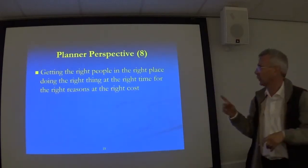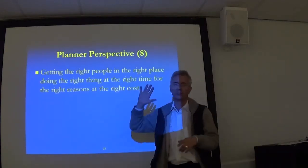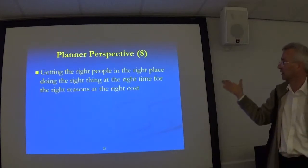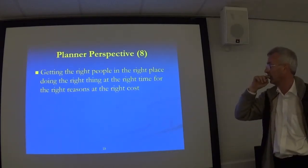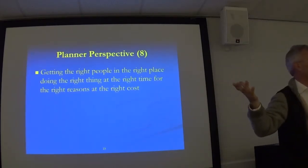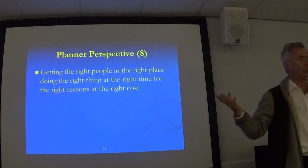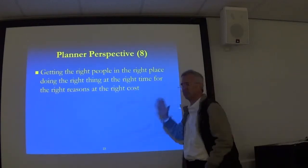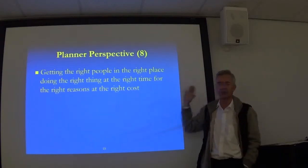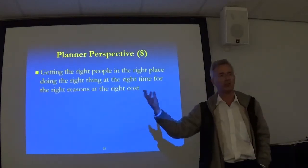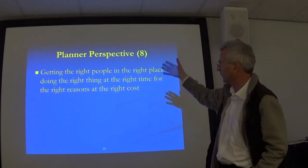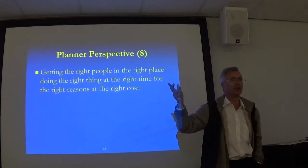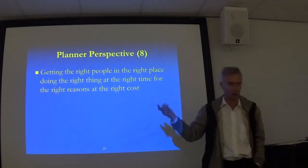All of this helps us get the right people in the right place doing the right things at the right time for the right reasons at the right cost. This comes from O'Rourke's book and is actually pretty much the wording of good governance in simple form - corporate governance, information governance. At the top level of the planner, this is what the Zachman architecture helps us to do.